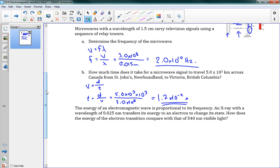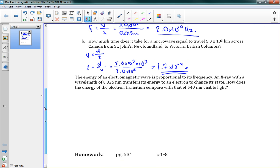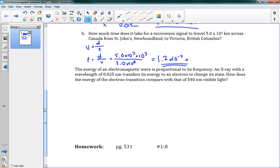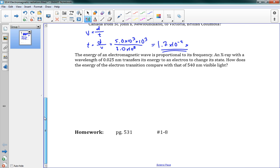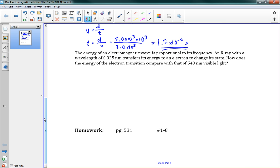You can see that these problems are fairly simple. We're really, we talk a bit about the concept here of electromagnetic radiation, but the actual math for this section is pretty simple. The next one here, the energy of an electromagnetic wave is proportional to its frequency. An x-ray with a wavelength of 0.025 nanometers transfers its energy to an electron to change its state. How does the energy of the electron transition compare with that of 540 nanometer visible light? So there's a few things going on here. We're saying we've got an x-ray, it has some energy, it's giving all of its energy to an electron. And we want to compare that much energy to the energy of visible light.